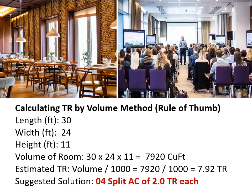Another example: for a restaurant, seminar room, conference room, or classroom with dimensions 30 ft × 24 ft × 11 ft, the total volume is 7920 cubic feet. Dividing by 1000 gives 7.92 TR. So we can safely say that 4 split ACs of 2 tonnes each shall be required for this space.